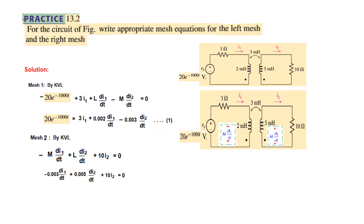Plugging in values for mesh 2 — M = 0.03 H and L = 0.05 H on the right side — and collecting terms gives the second equation as written in the book. These are the two mesh equations obtained. I hope this gives you an understanding of how to solve this type of problem. Thank you.